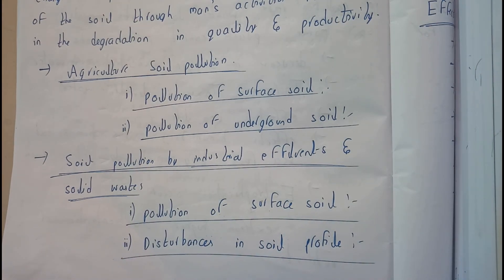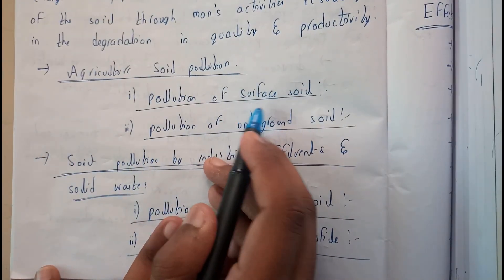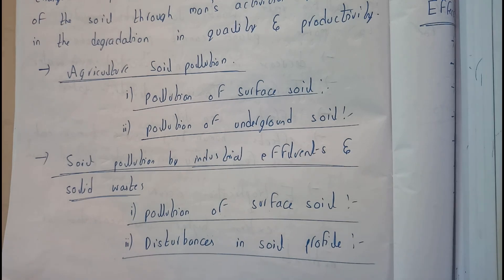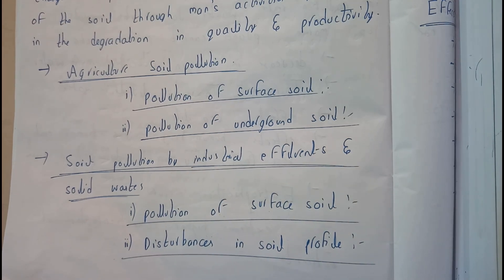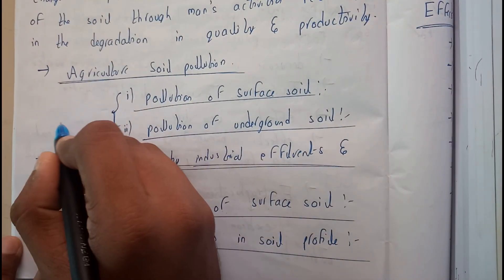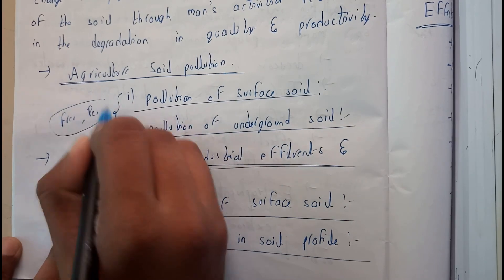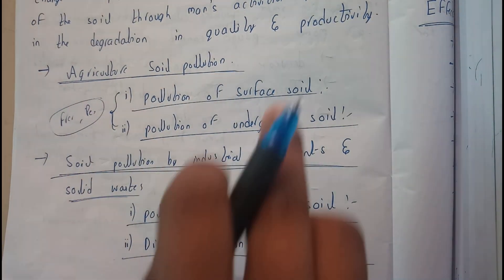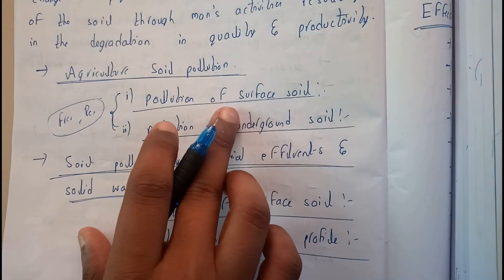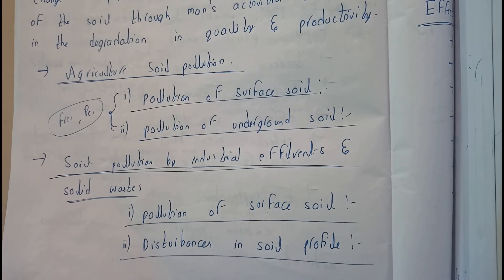Let's go through agricultural soil pollution. Surface soil can be polluted — this includes the usage of fertilizers and pesticides. These cause both surface pollution and underground pollution of soil.